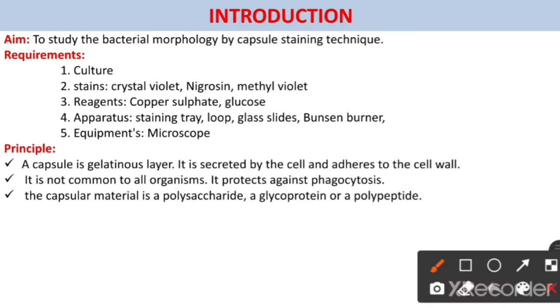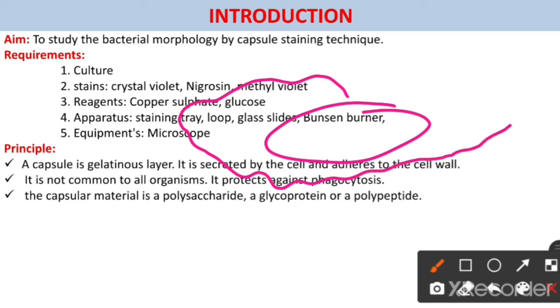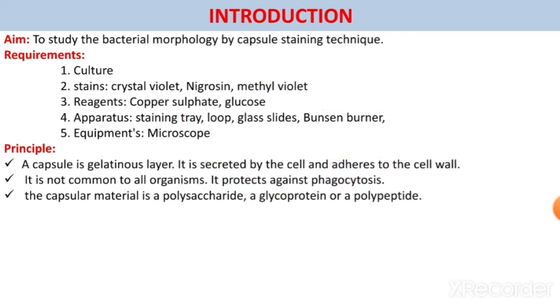Consider this is the bacterial cell wall and around this bacterial cell wall there is a slimy layer. The slimy layer is nothing but the capsule. And this capsule is totally made of a polysaccharide. And this capsule is phagocytotic in nature, meaning it protects the bacterial cell from phagocytosis.